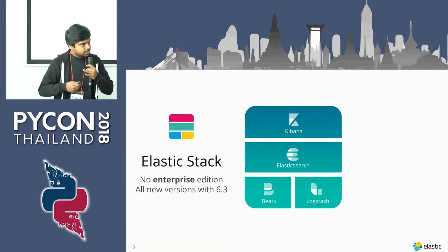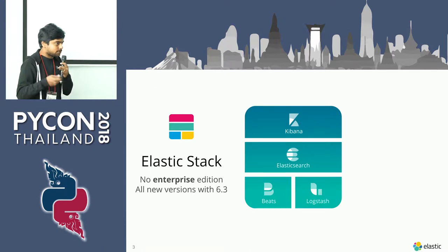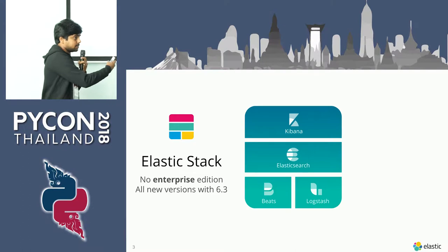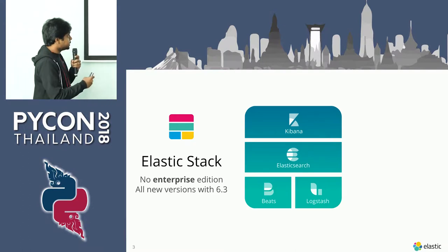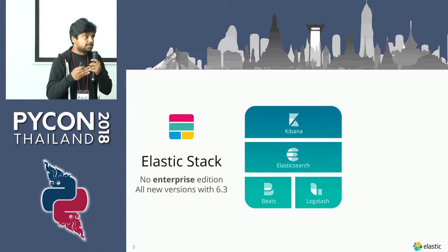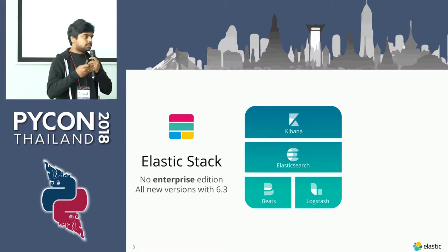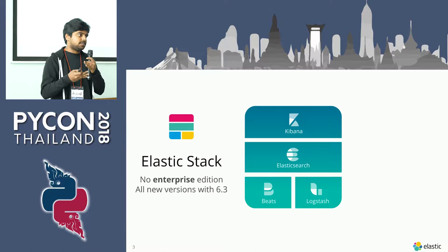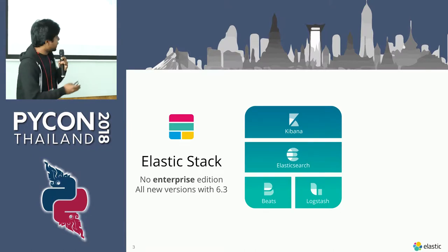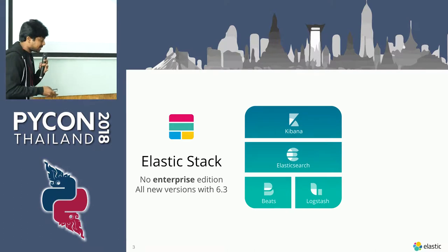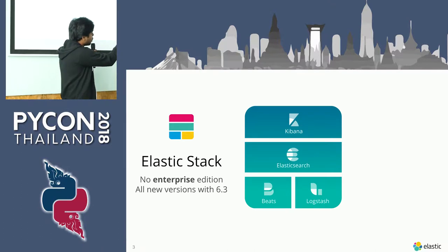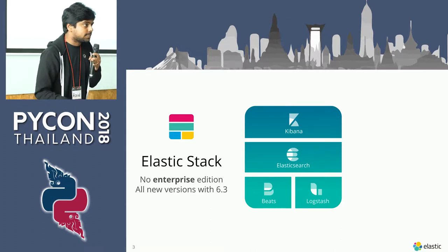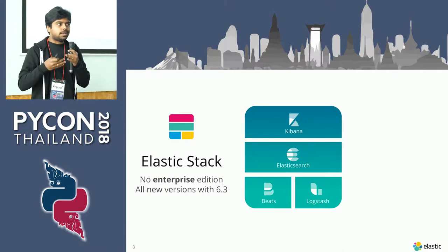Before going into APM, this is the Elastic Stack — all new, version 6.3, just released a day before. Elasticsearch is the heart and soul of this stack. It's a search engine which helps you do search or analytics on your data — a NoSQL, distributed, REST-based search engine. It's open source. The entire stack is open source under the Apache 2.0 license. You have Beats and Logstash, which are the ingestion modules that help you ingest data from various sources.